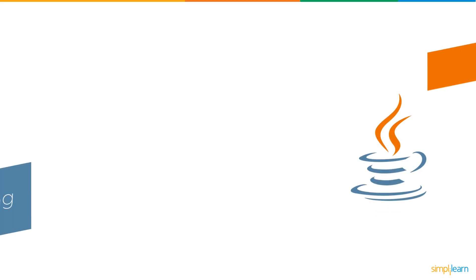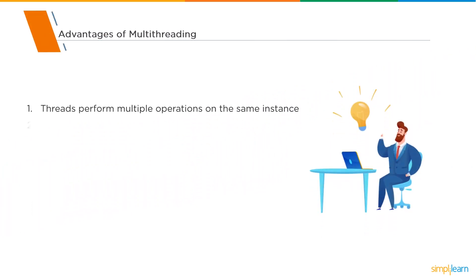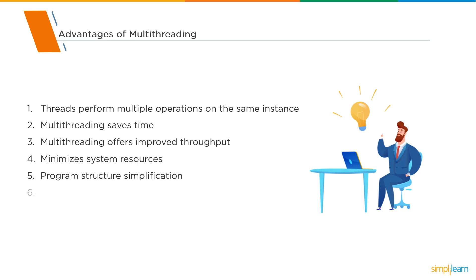Now let us move ahead and discuss the advantages of using multi-threading in Java. Following are the advantages: threads can perform multiple operations at the same instance and this will save a lot of time. Multi-threading offers improved throughput and minimizes the system resources. The program structure is really simplified and it offers superior application responsiveness. Finally, it improvises the communications between the different processes in the project.